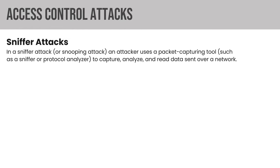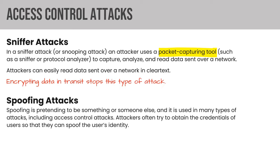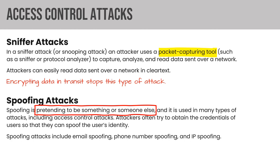Sniffer attacks use a packet capturing tool to capture, analyze, and read data sent over a network — an attacker can easily read clear-text data. Encrypting data in transit stops this kind of attack. Spoofing attacks involve the attacker pretending to be something or someone else to obtain credentials. Many spoofing attacks — email spoofing, phone number spoofing, IP spoofing — are used in phishing attacks.